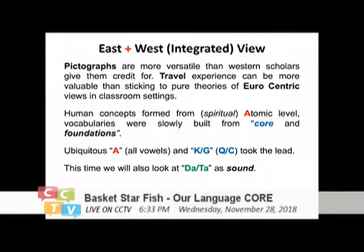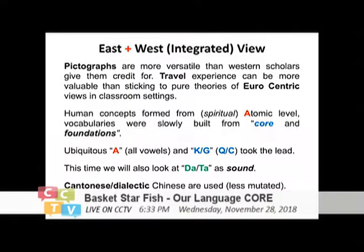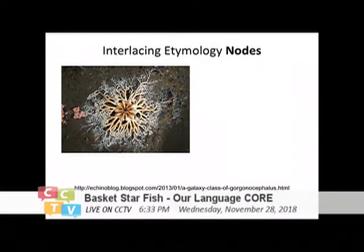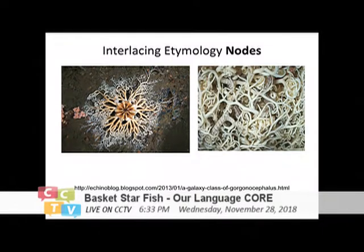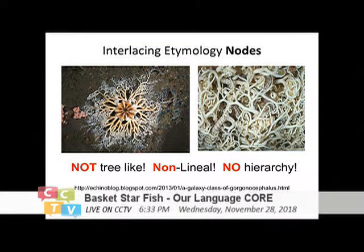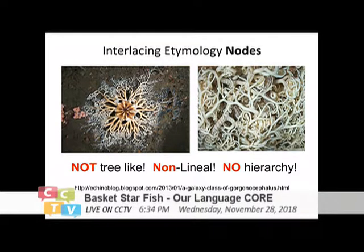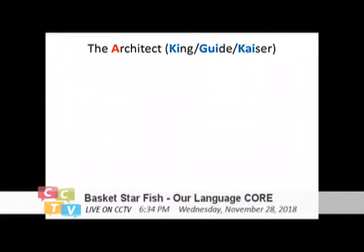This time I'm going to bring in a little bit about the D and T sound. Please don't look at the alphabets — just take them as sounds. This research is based on Cantonese and all Chinese dialects, because they are less mutated than Mandarin. Most scholars use Mandarin as the base, and that's why they don't see the similarity between these languages. The language is not tree-like, non-linear, and there is no hierarchy in the language family. Everyone on this planet is speaking the remnants of the original language — we just branched out in different directions, but the core is still the same.